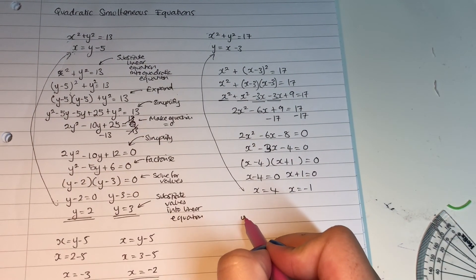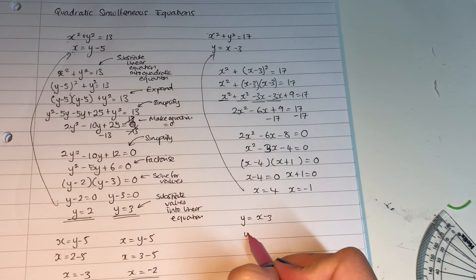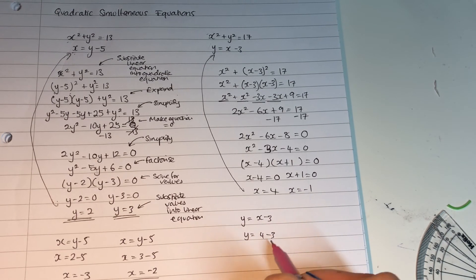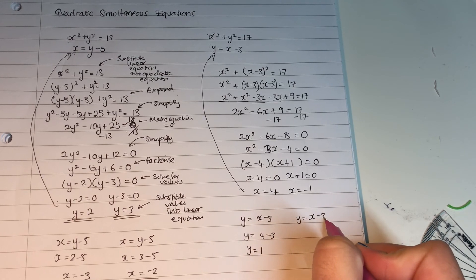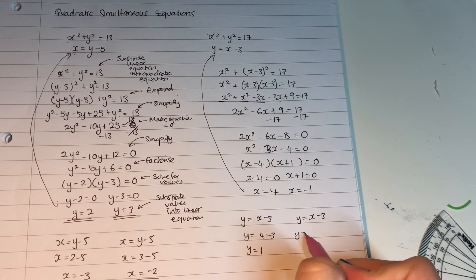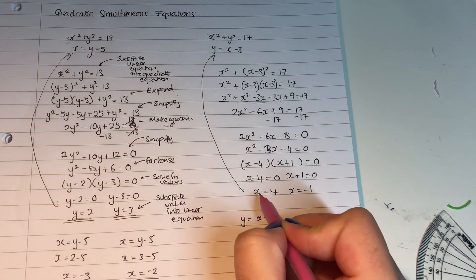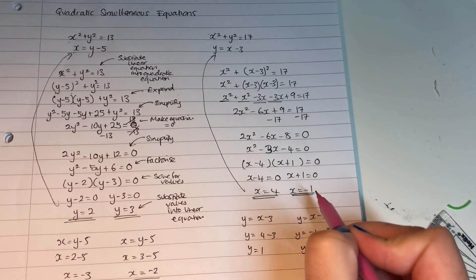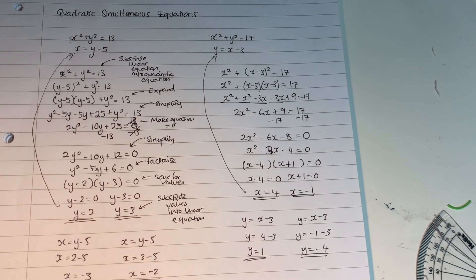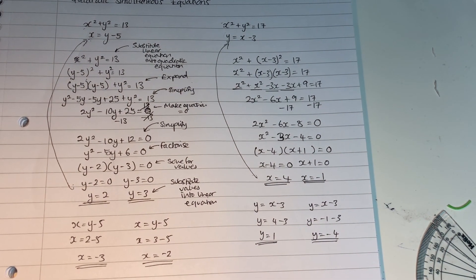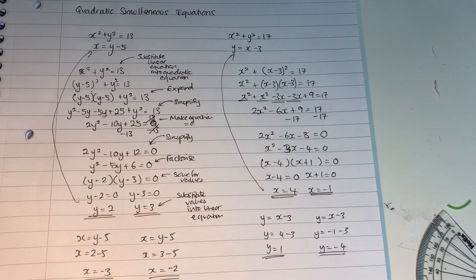y = x − 3. With x = 4: y = 4 − 3, so y = 1. With x = −1: y = −1 − 3, so y = −4. So x = 4 and x = −1, and y = 1 and y = −4. That's how to do quadratic simultaneous equations. Thank you!